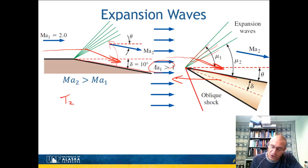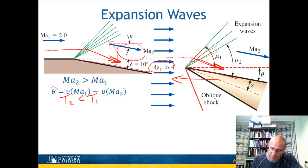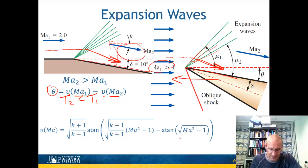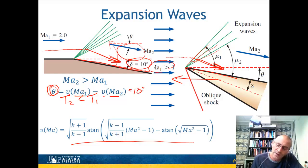Since the downstream Mach number is greater in an expansion wave, the temperature decreases — T2 is less than T1. To determine the expansion wave angle, the Prandtl-Meyer relationship is used. The relationship states that the turning angle theta equals the Prandtl-Meyer function evaluated at MA2 minus the same function evaluated at MA1. This requires an equation solver or computer to find MA2. Just recognize this relationship exists for analyzing expansion waves.